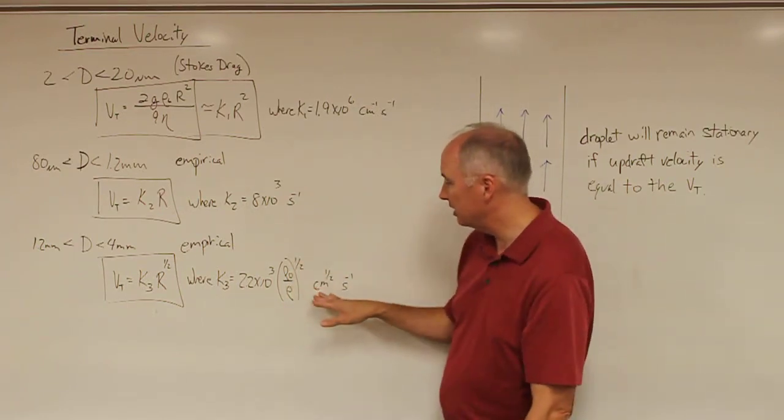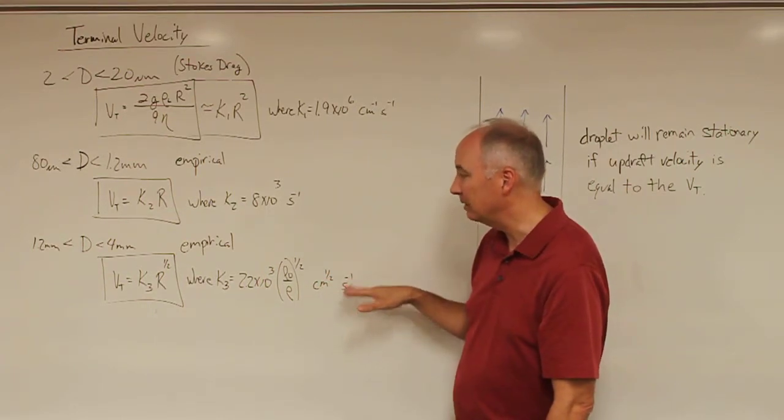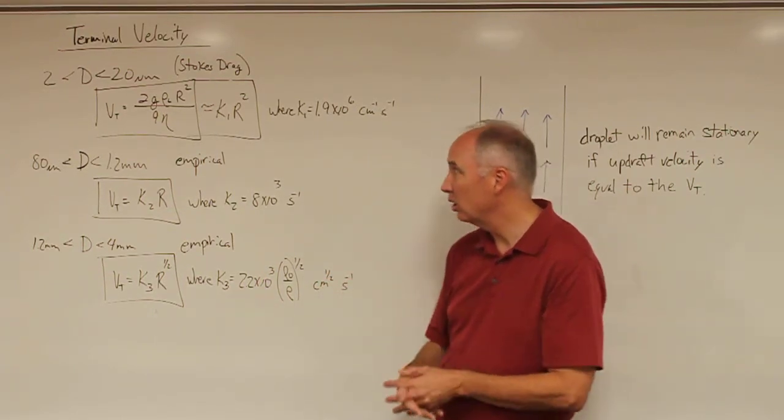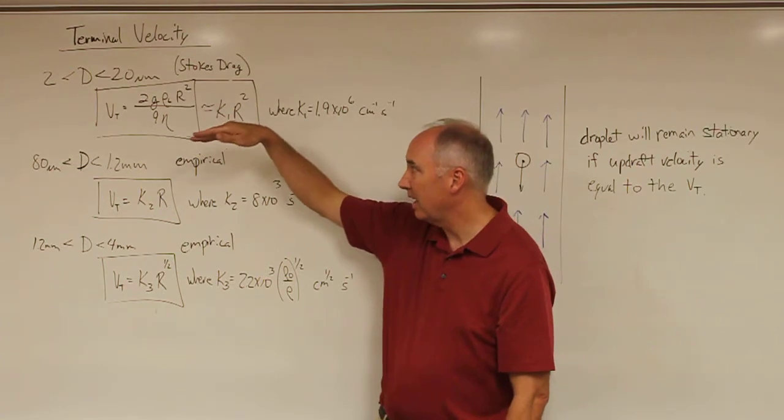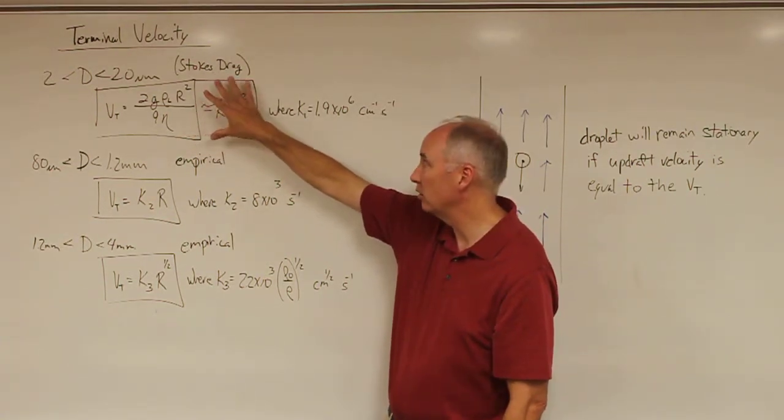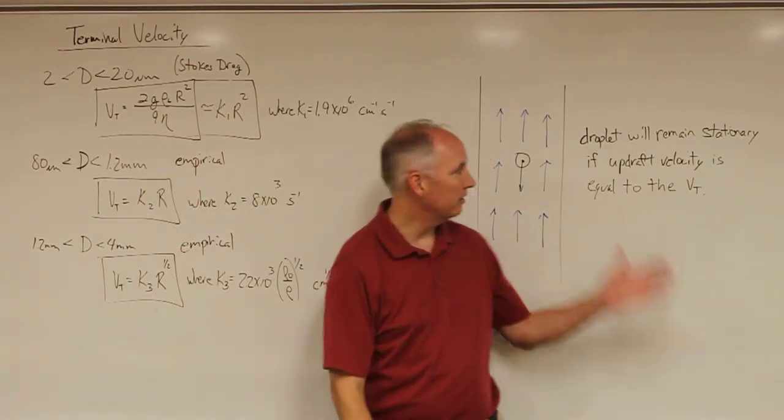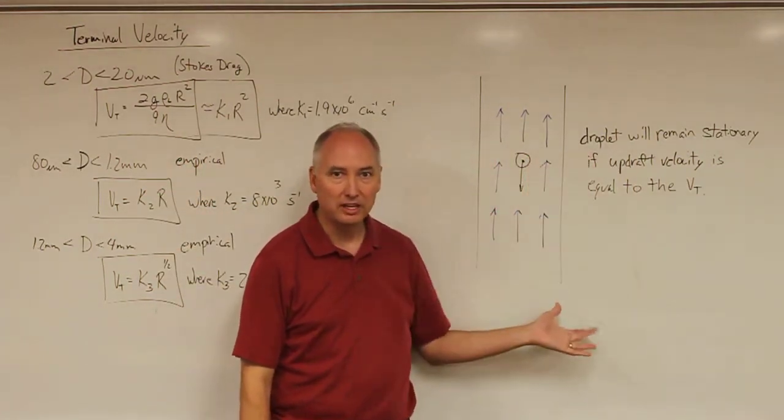Essentially, by having a mathematical formulation for Stokes drag and an empirical fit for data that was captured in the laboratory, we now essentially have a mathematical description of the fall speed of an individual droplet.